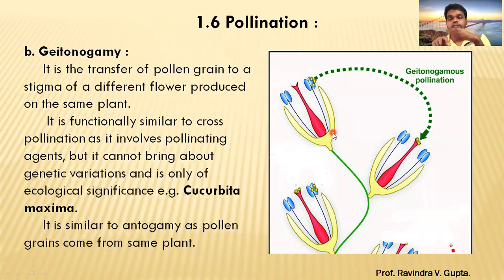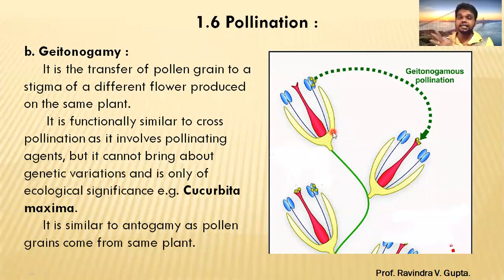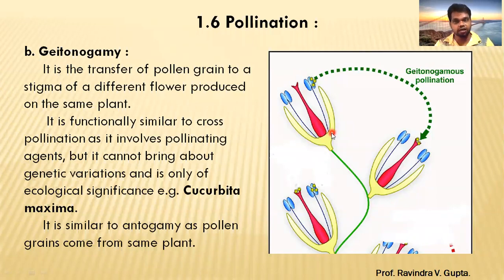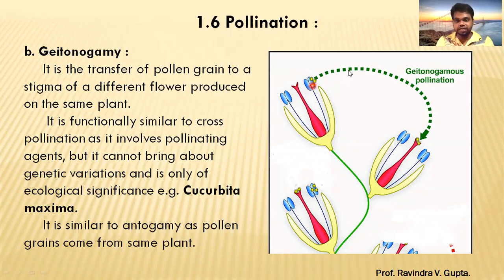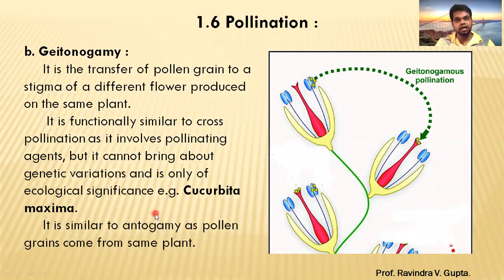For geitonogamy, if we have a honeybee or another external pollinating agent, it is involved in transferring the pollen grain from one flower to the next flower on the same plant. However, genetic variation will not arise from this because both flowers belong to the same plant.